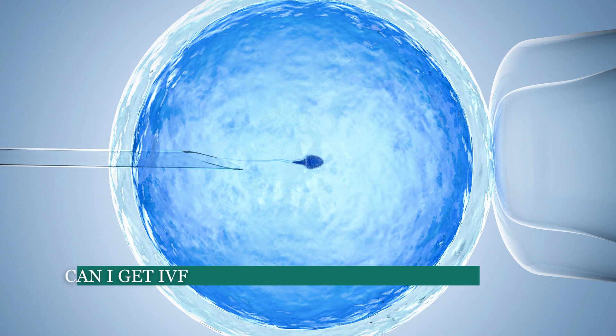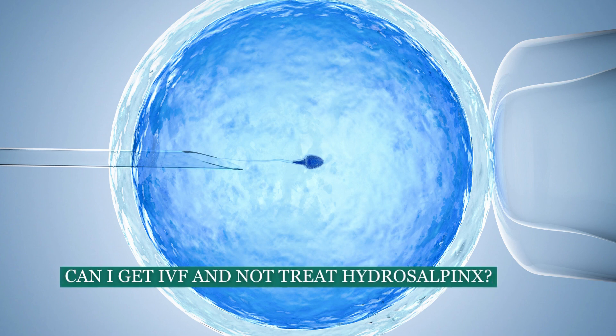Can you just get IVF and not treat hydrosalpinx? Many people ask this — 'I have bilateral hydrosalpinx, can I just do IVF to get pregnant?' The answer is no. Even if you go for IVF with hydrosalpinx, your chances of pregnancy are terribly low, because the chemical fluid in the tube tends to drip into the uterine cavity and disturb implantation.